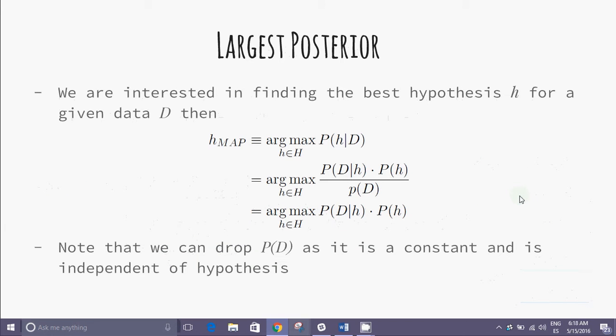The largest posterior probability for a given hypothesis is maximum of P(H|D) where H belongs to capital H. P(H|D) can be written as P(D|H) times P(H) divided by P(D). Here, P(D) is a constant and independent of hypothesis so it can be ignored. So, H_MAP finally becomes maximum of P(D|H) times P(H) for a given H where H belongs to capital H.